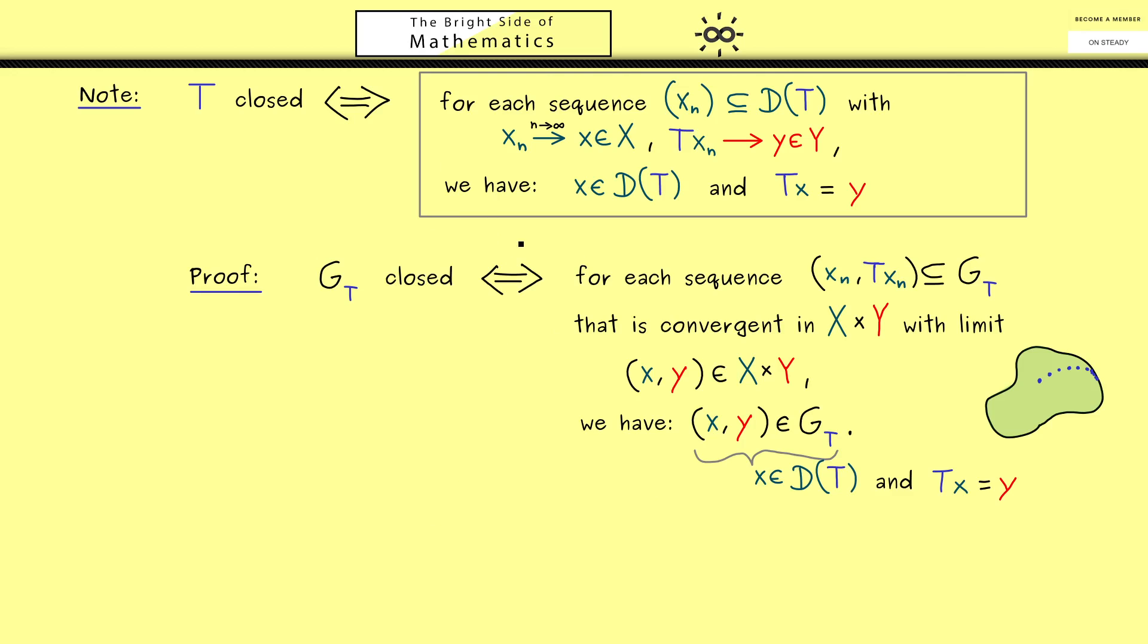This sequence definition is what you should always have in mind when we talk about closed operators. Then it's no problem at all to show the following: let's consider a bounded operator where the domain of T is the whole space X. This is an operator like we had in our functional analysis course before. The conclusion is that such a standard bounded operator is a closed one. This closed operator notion is so important because it's our generalization from bounded operators to unbounded operators. Closed operators still have some nice properties the bounded operators had.